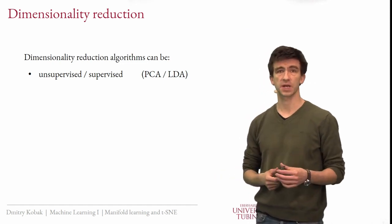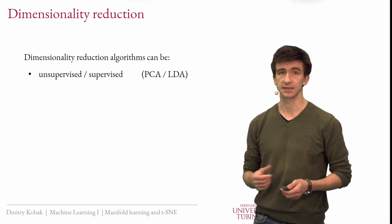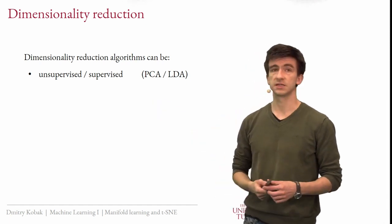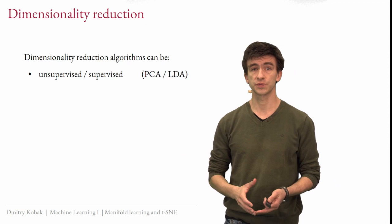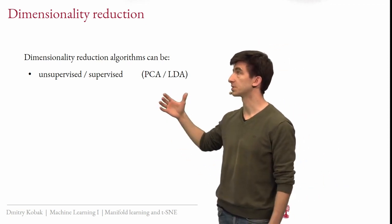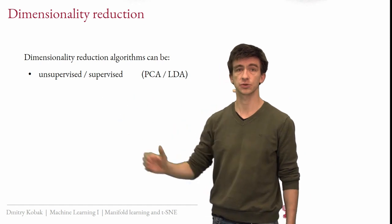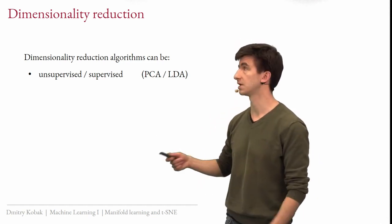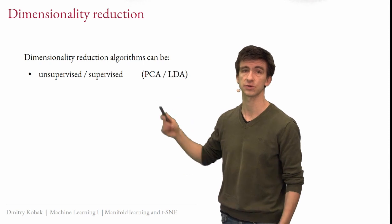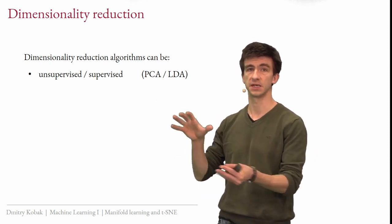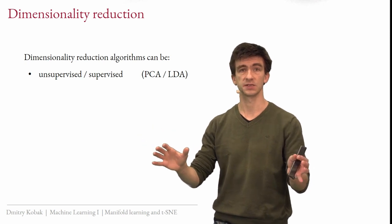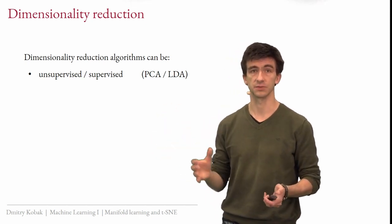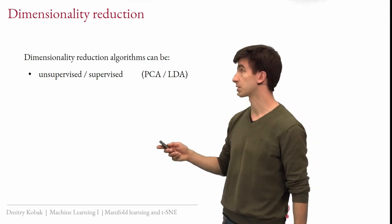Let me briefly discuss how we can classify dimensionality reduction algorithms. The first classification is that algorithms can be unsupervised or supervised. Most of the time we operate in the unsupervised setting, for example PCA from last week. But one can consider supervised dimensionality reduction — for example, linear discriminant analysis can be understood as finding a linear projection that maximally separates classes. So this is dimensionality reduction guided by class labels — a supervised dimensionality reduction problem.